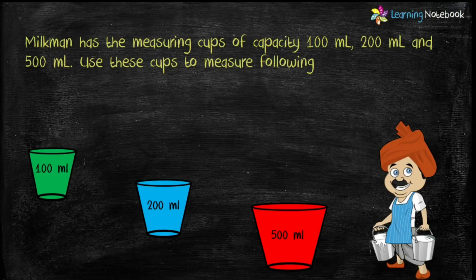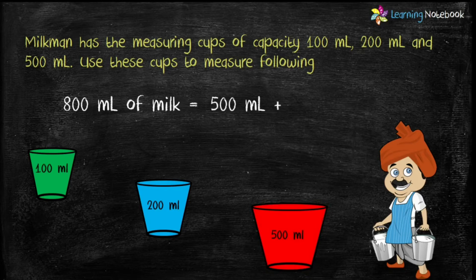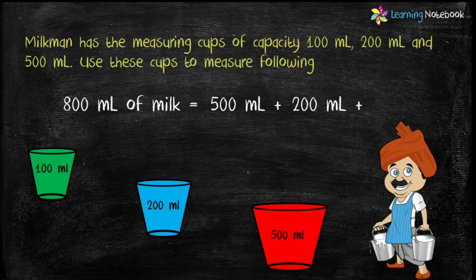In the third scenario, the milkman has to measure 800 ml of milk. He first takes the 500 ml cup; 800 minus 500 is 300. To measure the remaining 300 ml, he uses the 200 ml cup and then the 100 ml cup. So to measure 800 ml, the milkman uses all three cups.